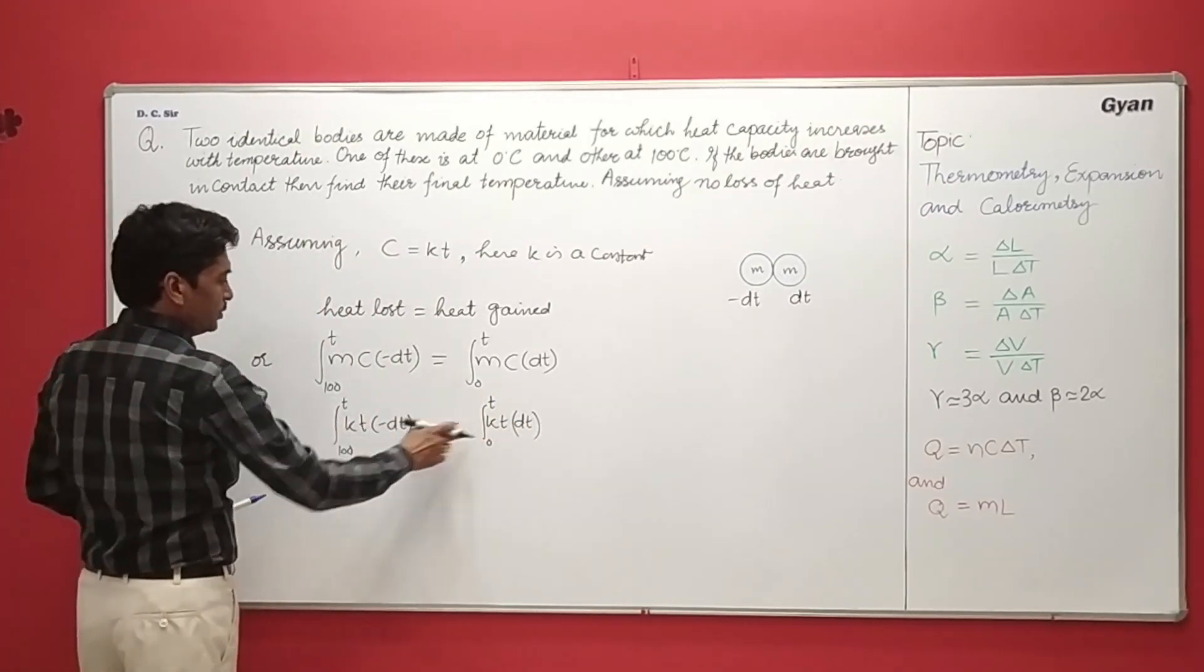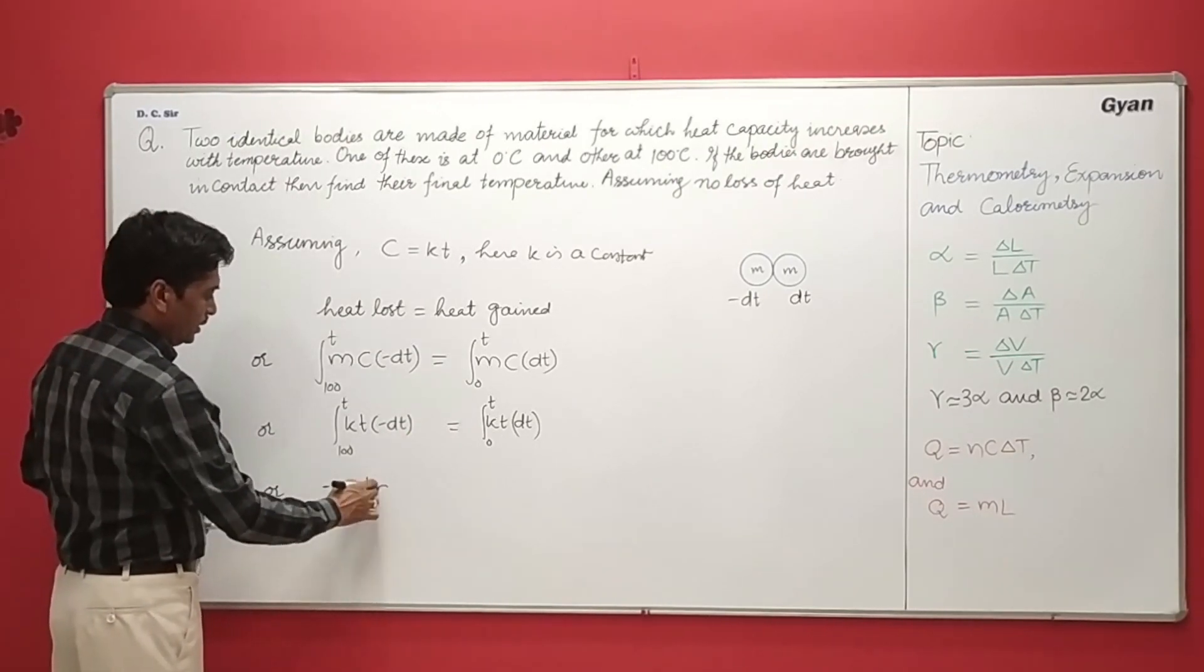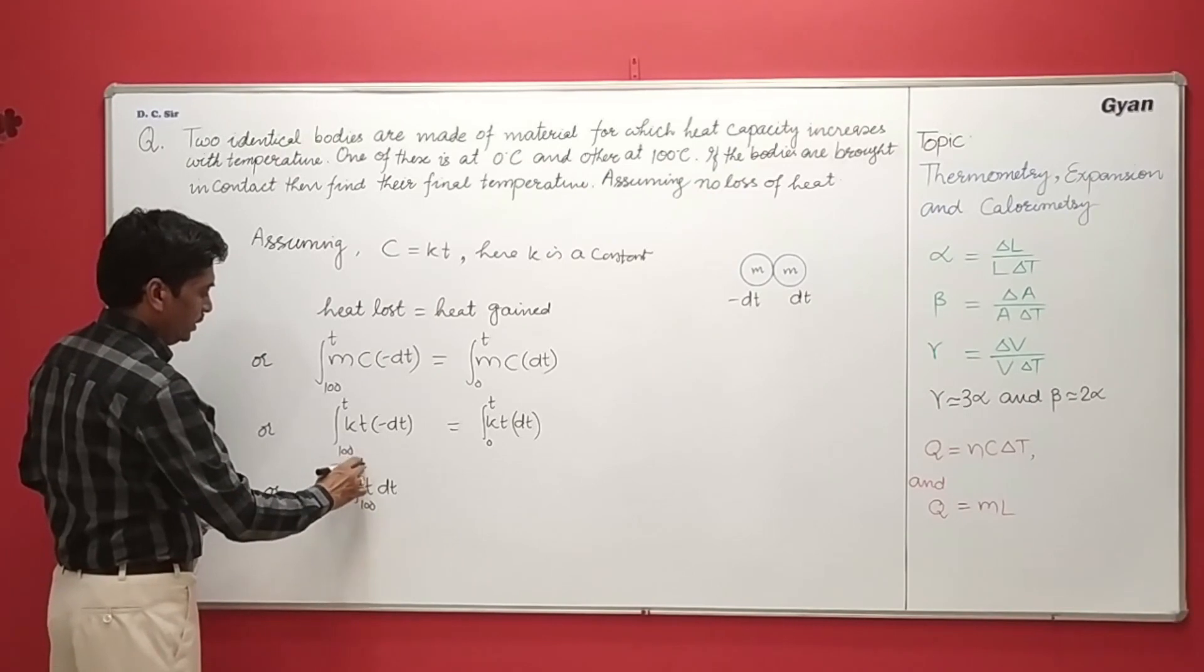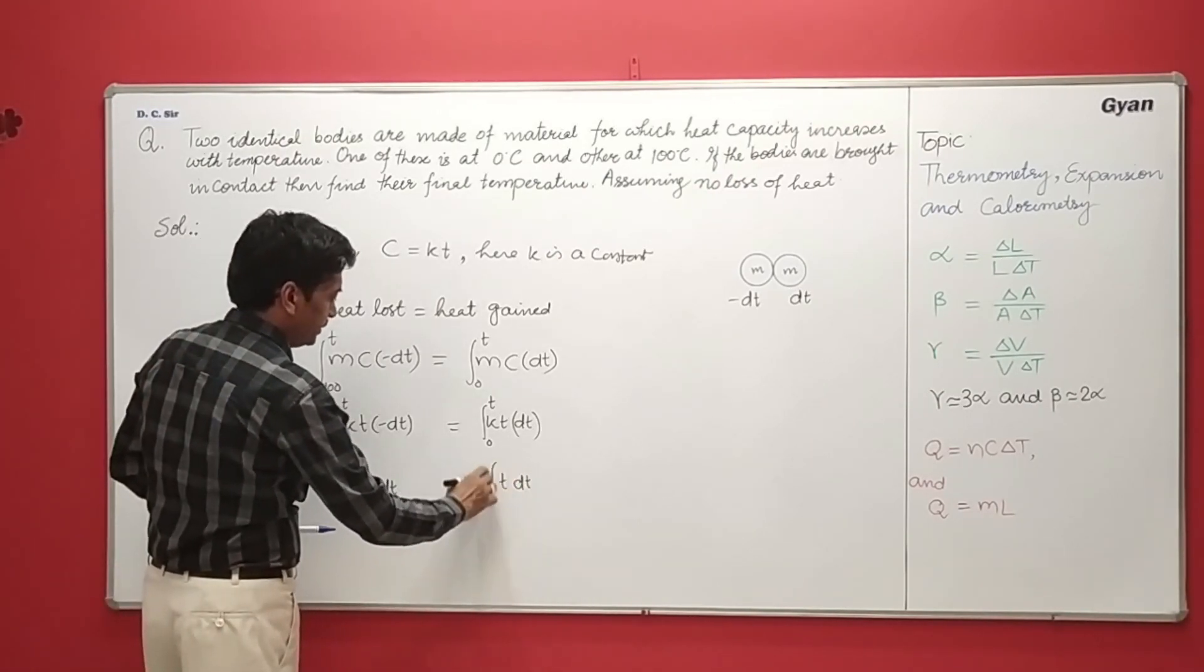Here K also gets cancelled out from both sides. So T DT from 100 to T and here it is T DT from 0 to T.